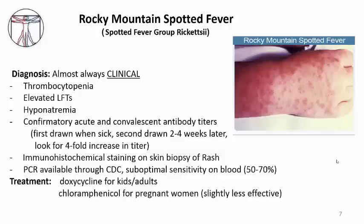The diagnosis of Rocky Mountain Spotted Fever is almost always clinical, based on signs and symptoms. However, there are classic laboratory abnormalities: thrombocytopenia and elevated LFTs. In RMSF specifically, hyponatremia can also be seen, thought to be due to release of antidiuretic hormone in the setting of capillary leak and hypovolemia. Hyponatremia is one hallmark finding that can help separate RMSF from ehrlichiosis and anaplasmosis.